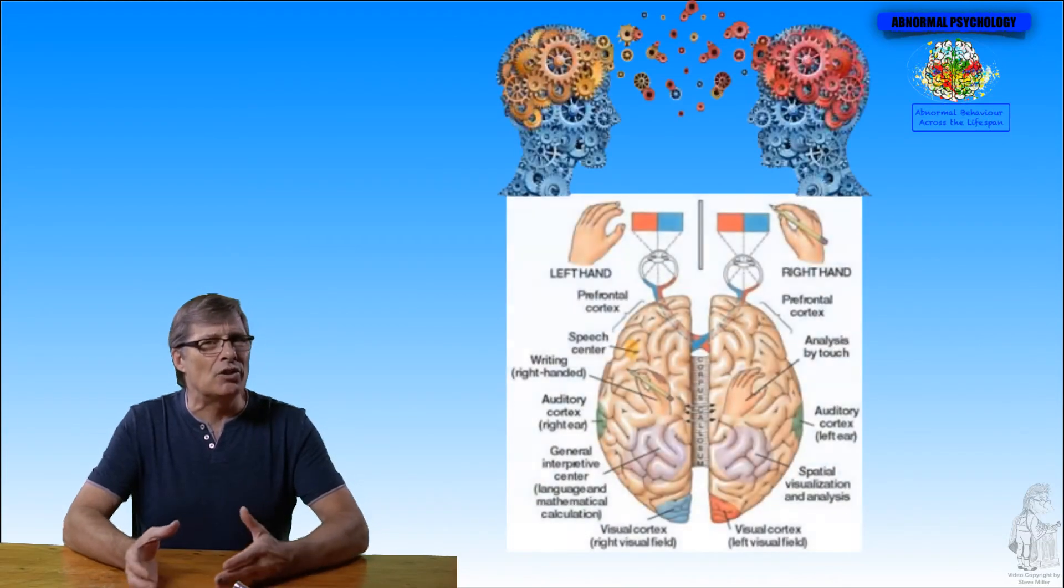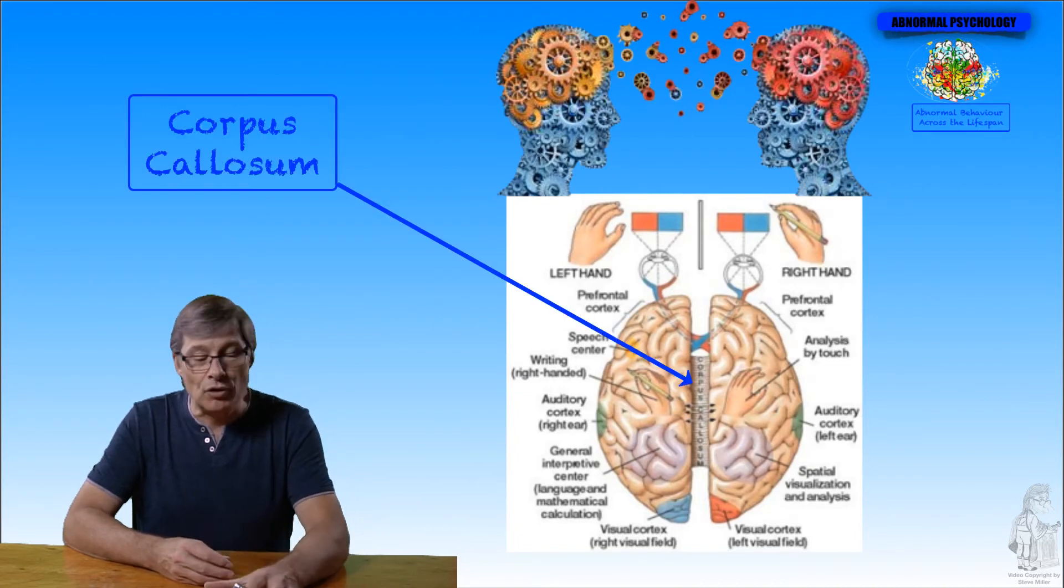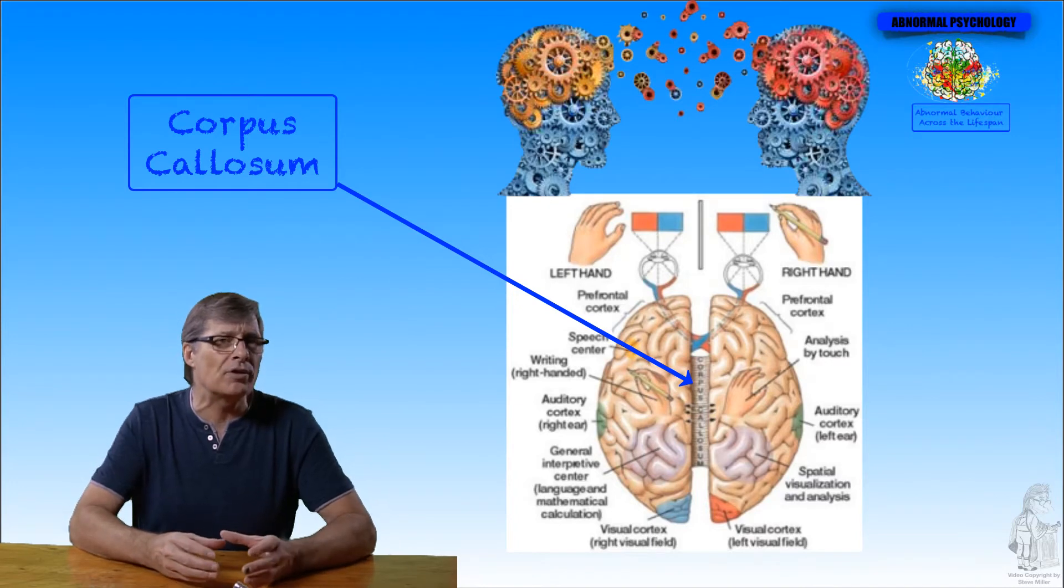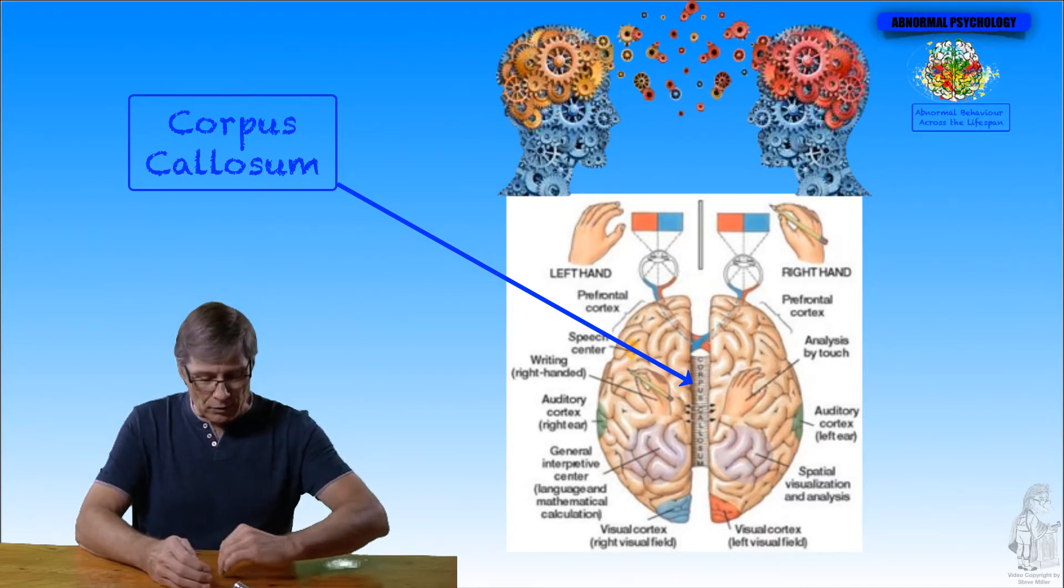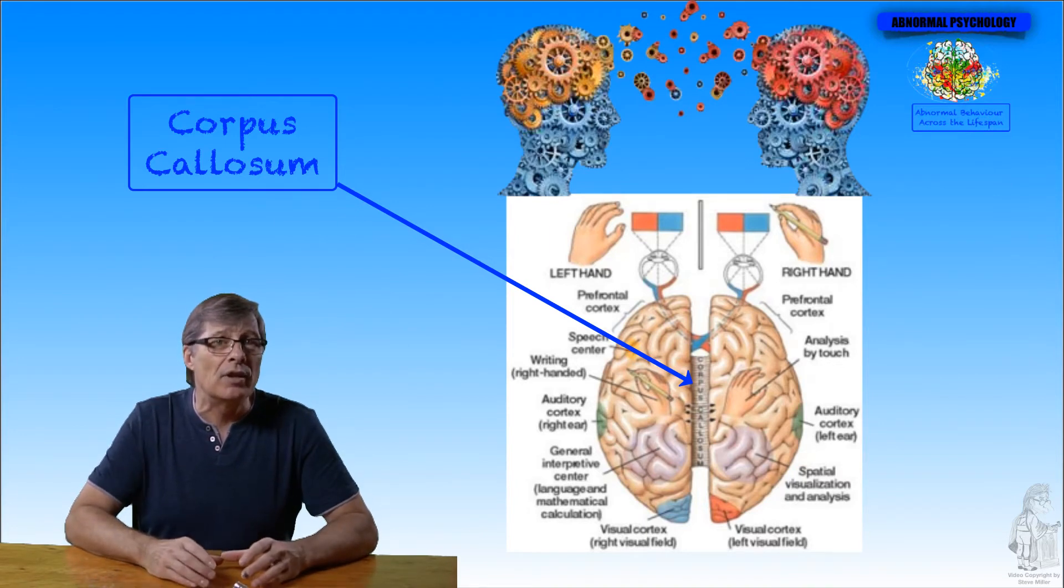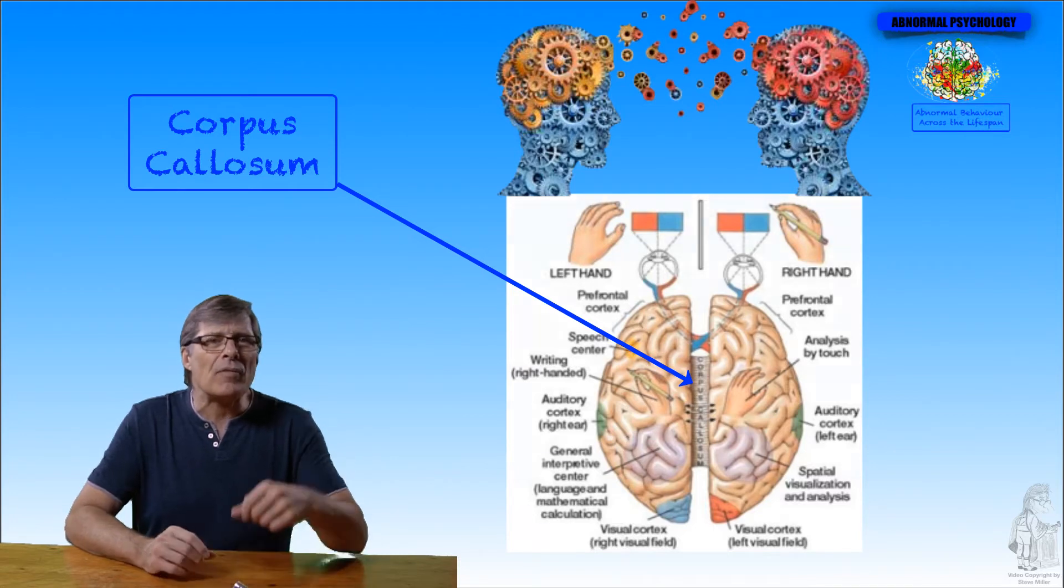MRI scans show differences from non-autistic brains including the connective tissue between the two lobes or the two halves of the brain, the corpus callosum. This lateralization difference may also suggest a cause feature. Neurodevelopmental deficits look like they could also be important. This view looks at genetic and therefore chromosomal suspicions for a cause.